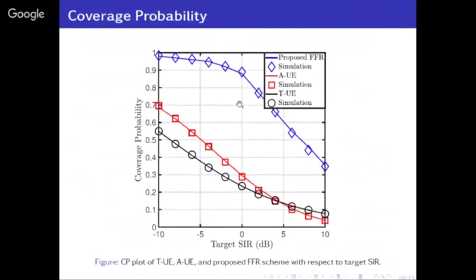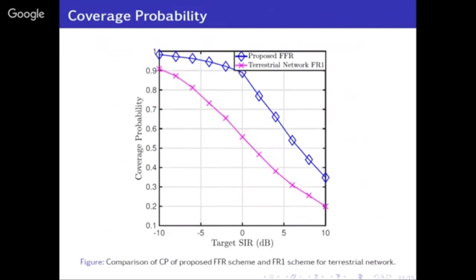If you look at the coverage probability, the proposed FFR for the aerial BS achieves much higher coverage than the scenario without any FFR. There is a huge increment in coverage. Comparing the FFR scenario in the aerial BS with the terrestrial network, the proposed FFR coverage is much better than the terrestrial network FR1.